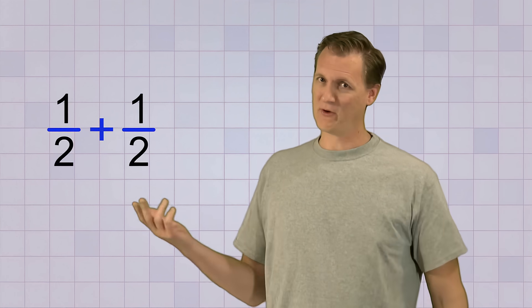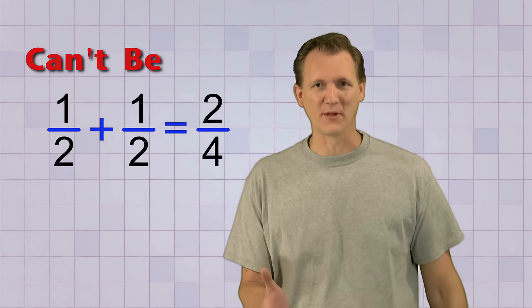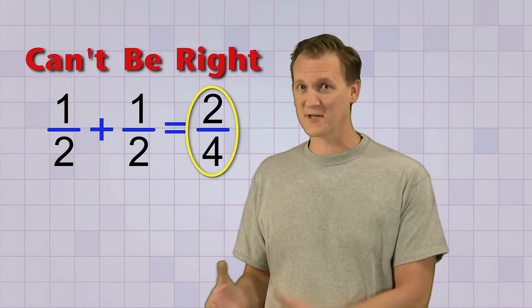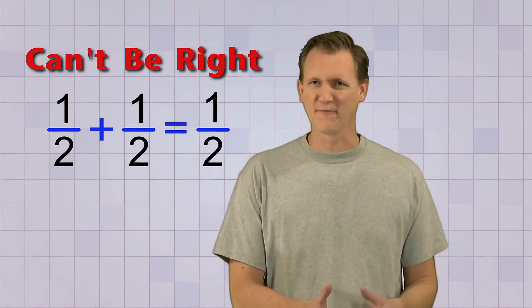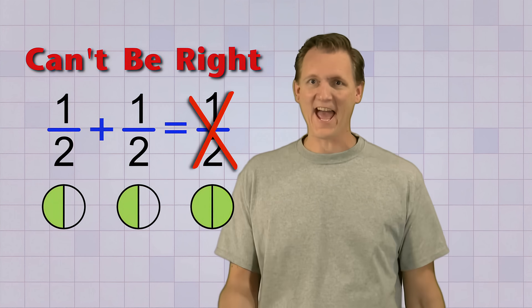Well alright, let's try it and see, but I got a bad feeling about this. Let's try adding 1 half to 1 half. So if we added the top numbers, we'd get 2, and if we added the bottom numbers, we'd get 4. But that can't be right, because 2 over 4 simplifies to 1 half. And if you add 1 half and 1 half, you should get a whole, not a half.